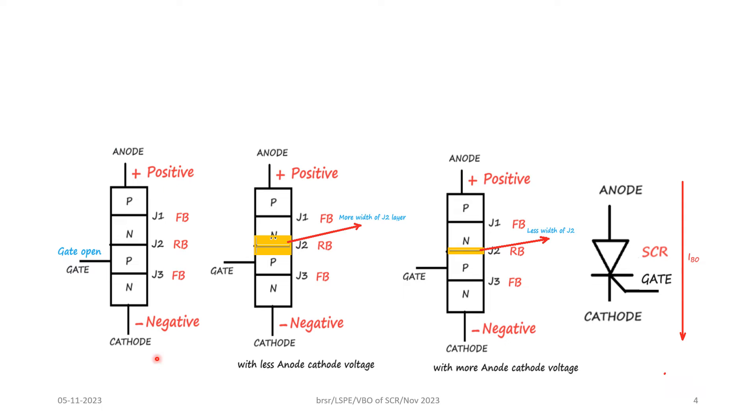When anode cathode voltage is given forward biased, that is when anode is made positive with respect to the cathode and if the gate circuit is kept open, junctions J1 and J3 will be forward biased and J2 will be reverse biased.